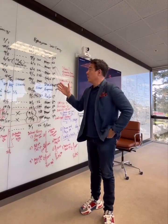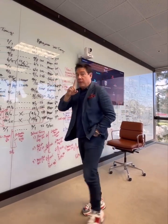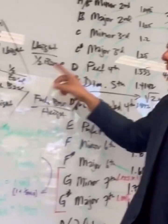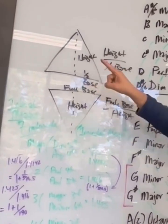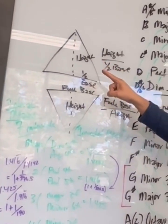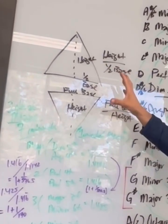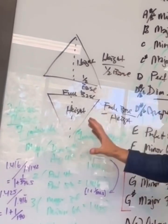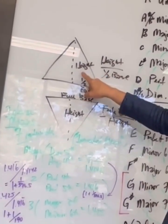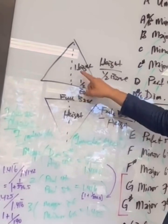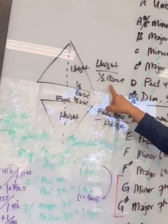Let me take you through what we basically found. I discovered only a few weeks ago that an isosceles triangle represents perfectly musical intervals and their inverse intervals, simply by taking the height of a triangle over one half of its base.